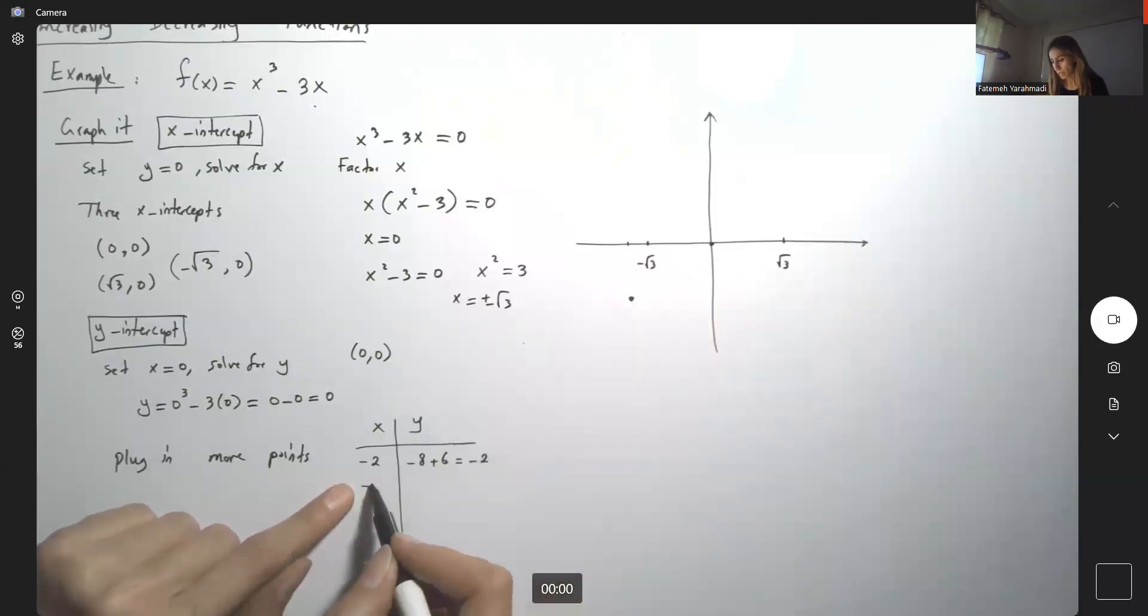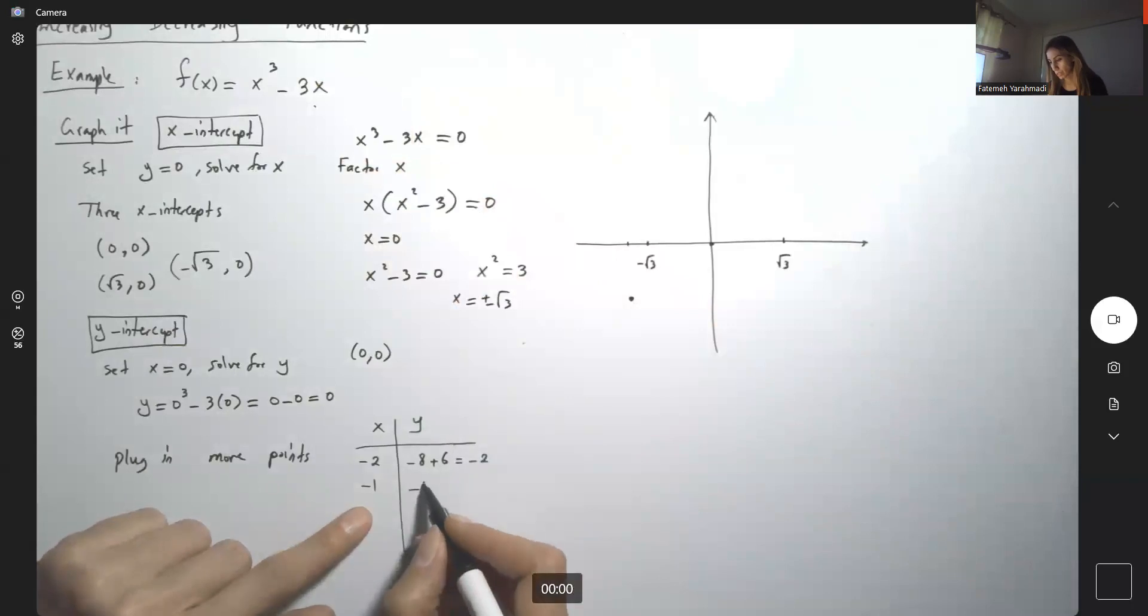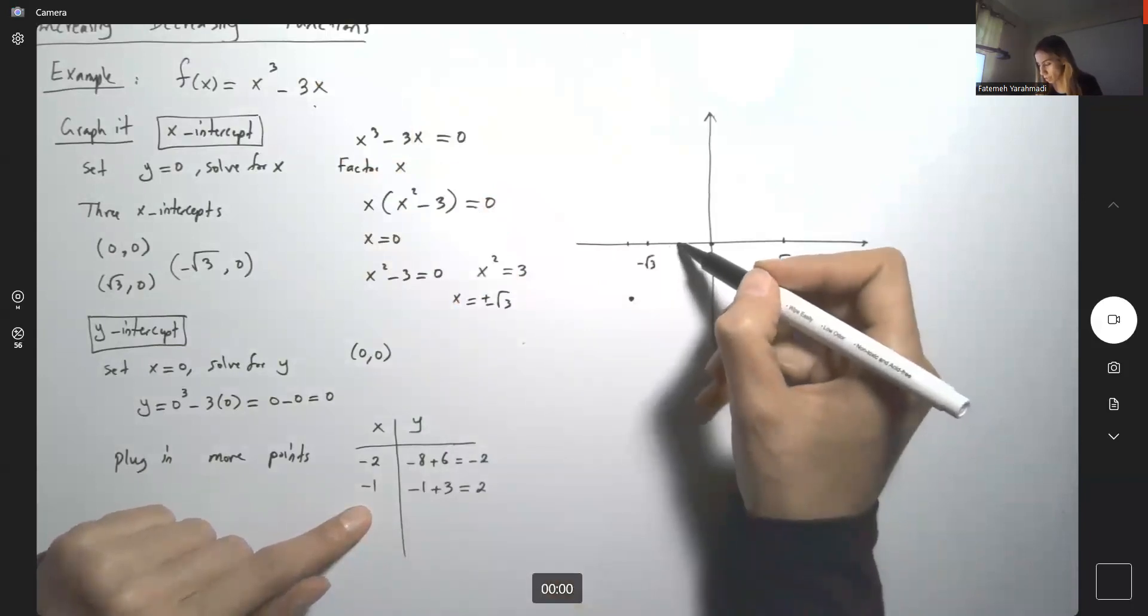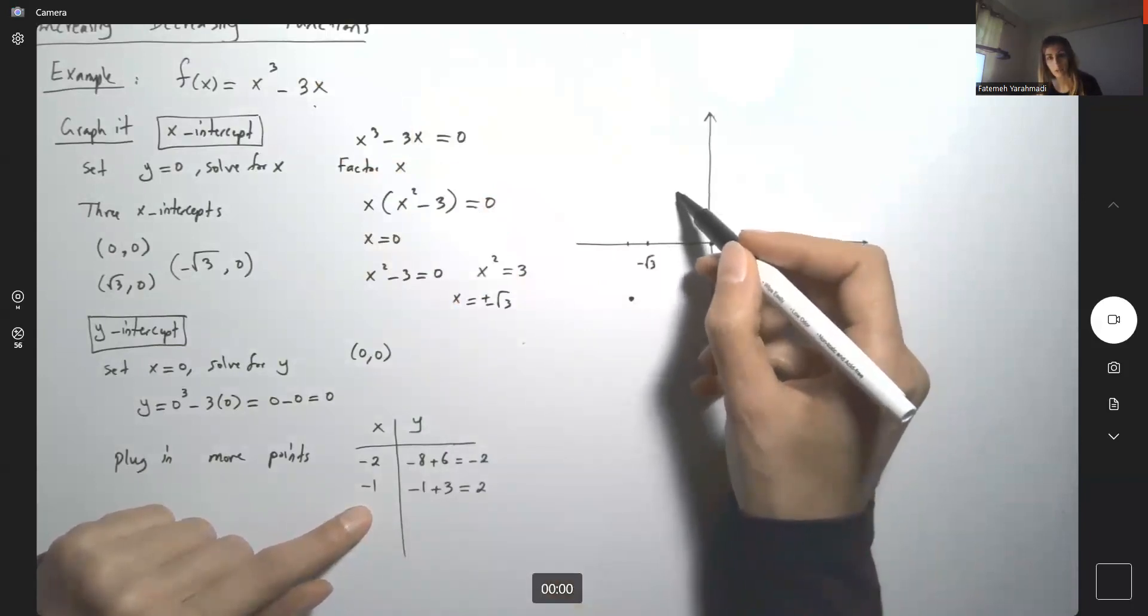If I plug in -1, what do I get? (-1)³ = -1, minus 3(-1) = +3, which gives -1 + 3 = 2. So when x = -1, y = 2.